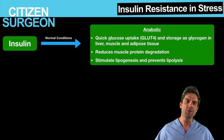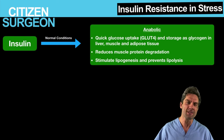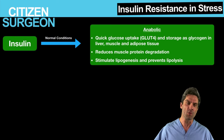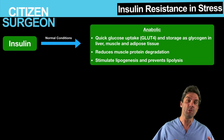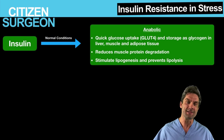In the normal state, insulin is secreted from the beta cells of the pancreas — the islets of Langerhans. This leads to quick uptake of glucose through receptors like the GLUT4 receptor in peripheral tissues. Insulin reduces muscle protein breakdown, stimulates lipogenesis, and prevents lipolysis.